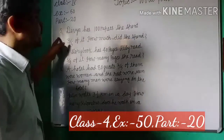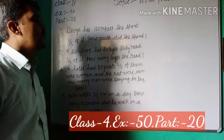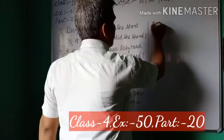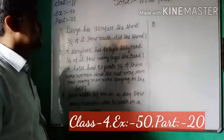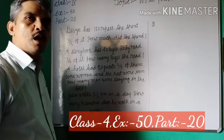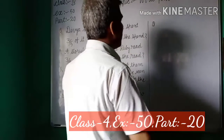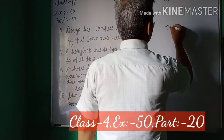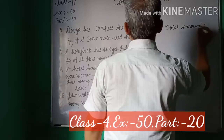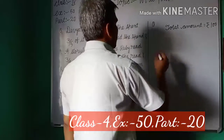First question: Divya has 100 rupees. She has spent 3 by 5 of it. How much did she spend? At first, the total amount is equal to rupees 100.